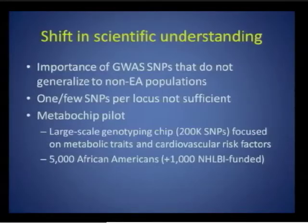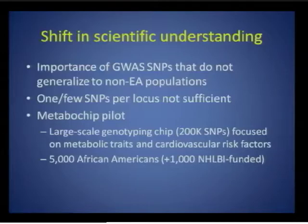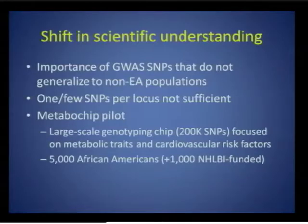During the first two years, it was becoming evident in the PAGE data that GWAS SNPs don't always generalize to non-European populations, and that understanding the exceptions is important. In addition, given population-specific linkage disequilibrium, more than one or a few SNPs are needed to interrogate these regions well. At the same time, a group was working to develop a customized, large-scale genotyping chip that would address precisely this problem.